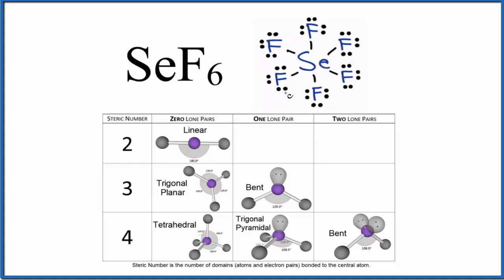It's surrounded by fluorine atoms. So if we look at this chart here, we look at the steric number, that's the number of things on the central atom. We have one, two, three, four, five, six. So we have a steric number of six. So we're going to need the next part of this chart.